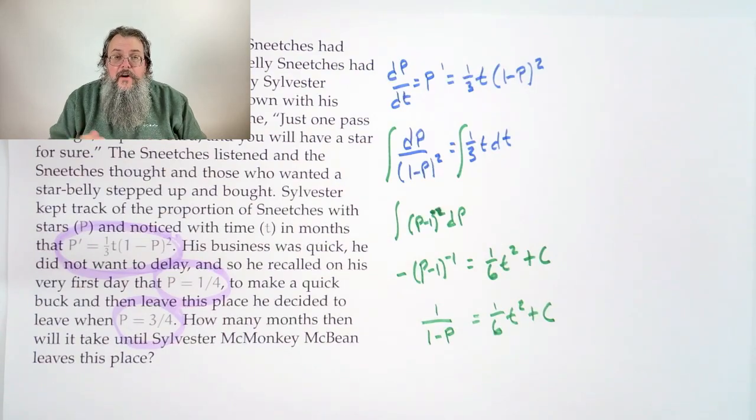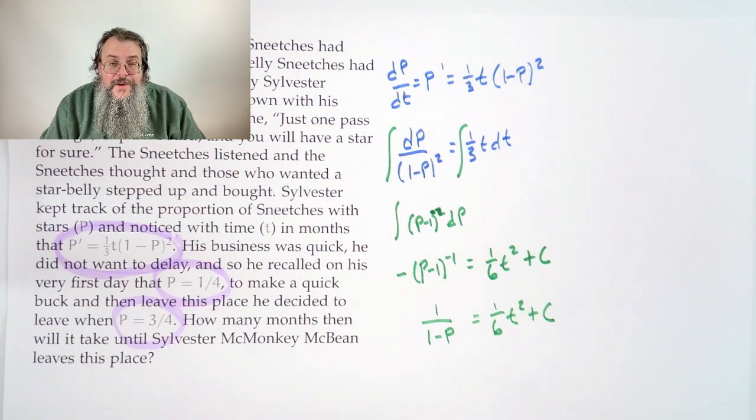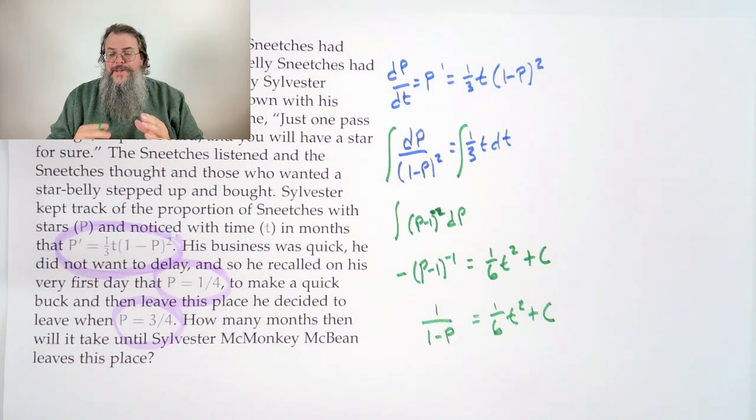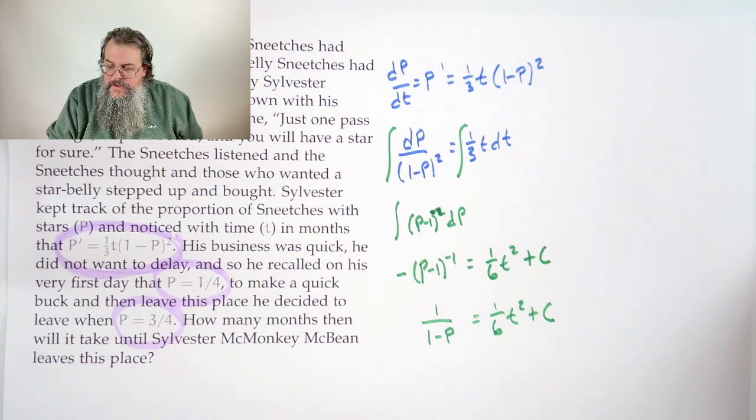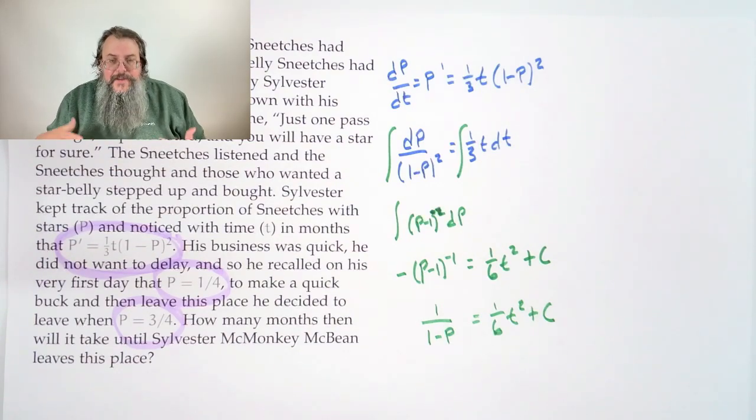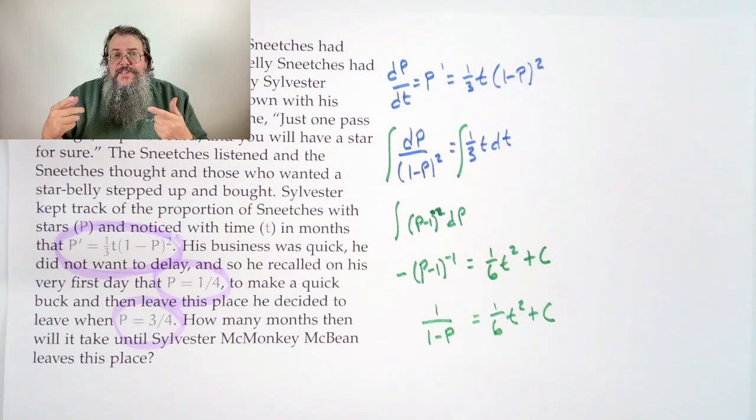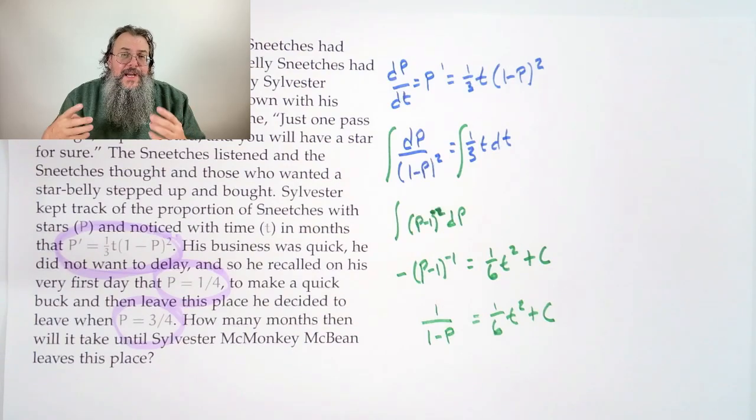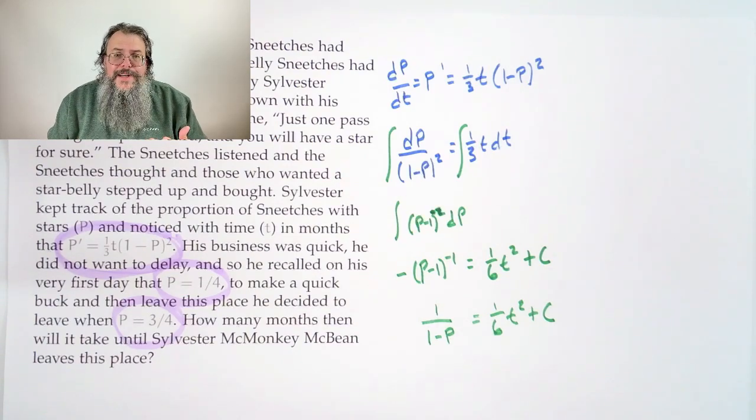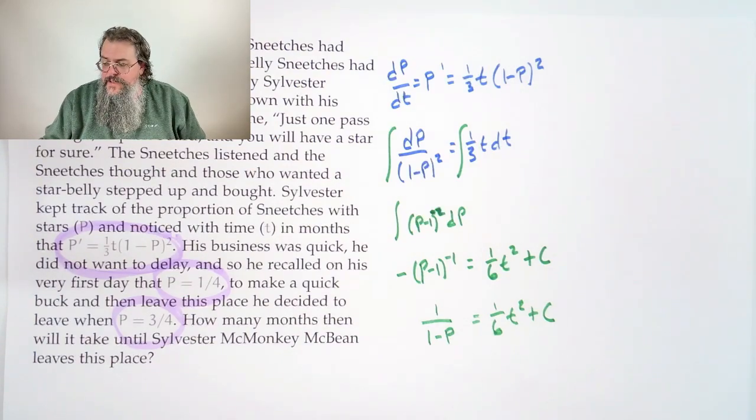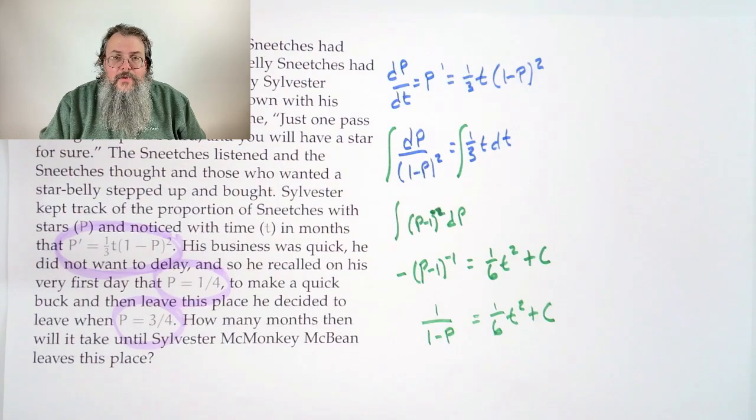Now if you clean this side up over here, you'll have 1 over - the minus can go inside again - and it's 1 minus P. So 1 over (1 minus P) is 1/6 T squared plus C. Now you might say let's solve for P, except we actually don't have to. You see, if you look at what's happening here, what we have is a relationship between P and T, and our question doesn't ask us to solve for P.